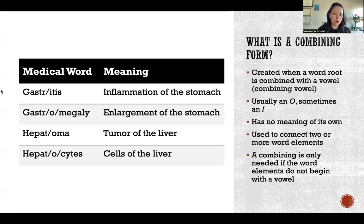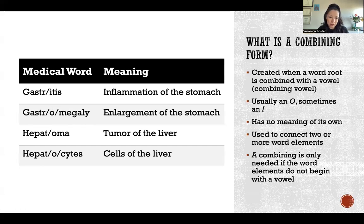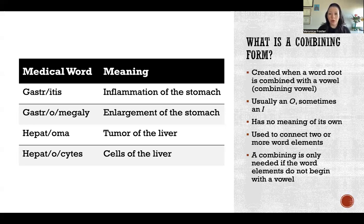But if we take that same word root 'gastr' and want to attach it to '-megaly' as the suffix, because '-megaly' starts with a consonant rather than a vowel, we need to put a little vowel in between to attach the word elements together. So the combining form of 'gastr' would be 'gastro'. In that case, we would use the combining form 'gastro' to add the suffix '-megaly'.